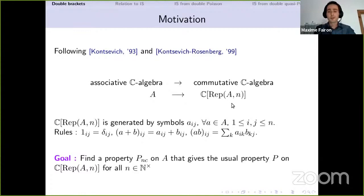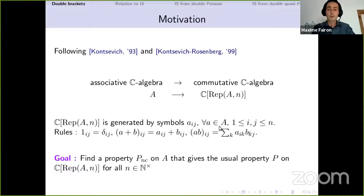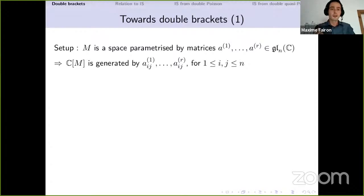I will also build on that to try to introduce some non-commutative version of integrable systems, though it's not really complete. Let me stress again that really whenever I'm using a symbol with some indices on it, you just need to think of it as being entries in a matrix representing an element of the algebra in some representation. The setup is just to think about a space M parameterized by some matrices, so that the corresponding coordinate ring is generated by the entries of these matrices.